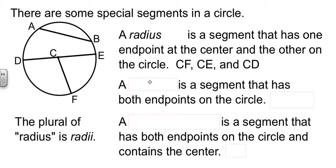Now, a segment that has both endpoints on the circle is called a chord. So something like AB would be a chord. Also, DE would be a chord because D and E are both on the circle.